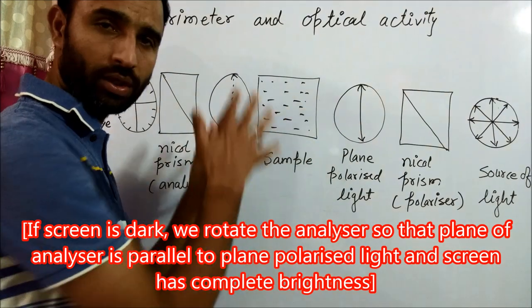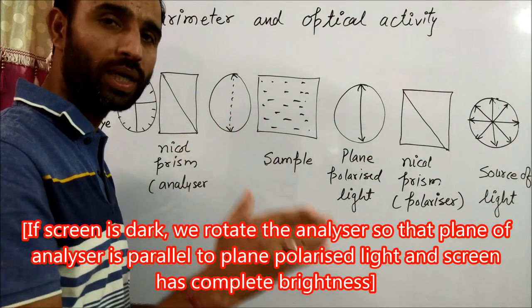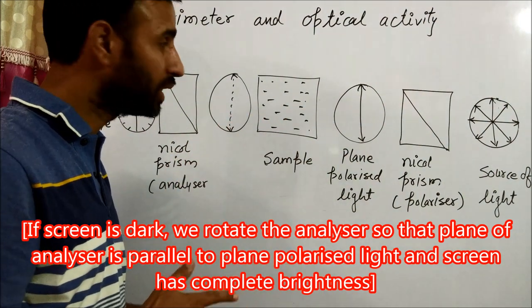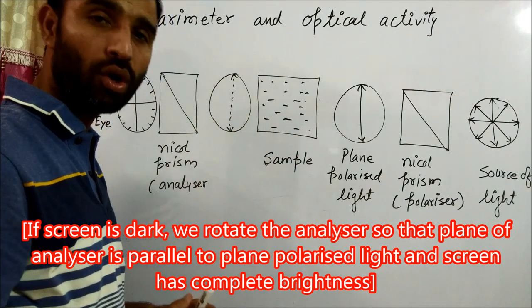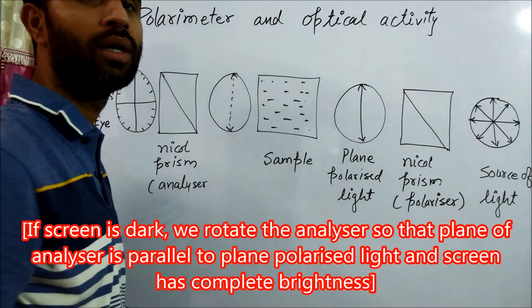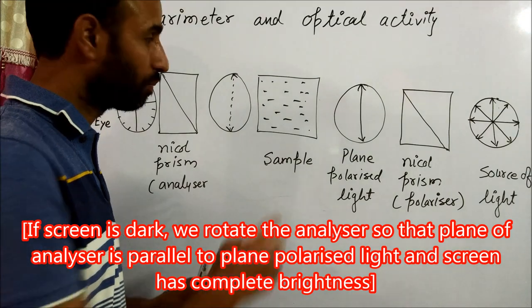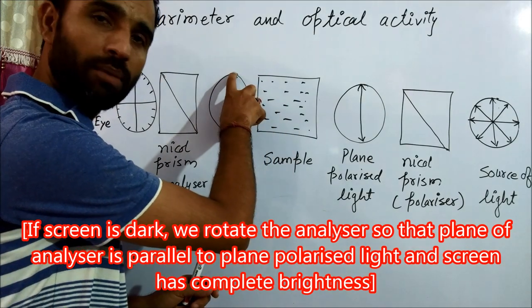Now, first we pass through water. Water is optically inactive, which means water cannot rotate the plane of the light. So plane polarized remains in the same plane.